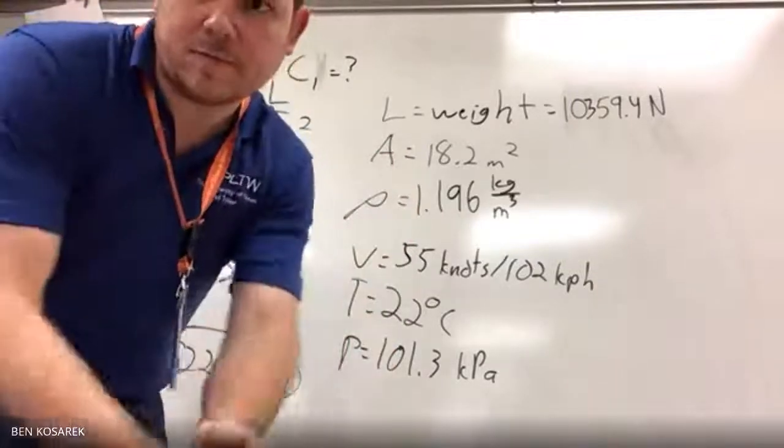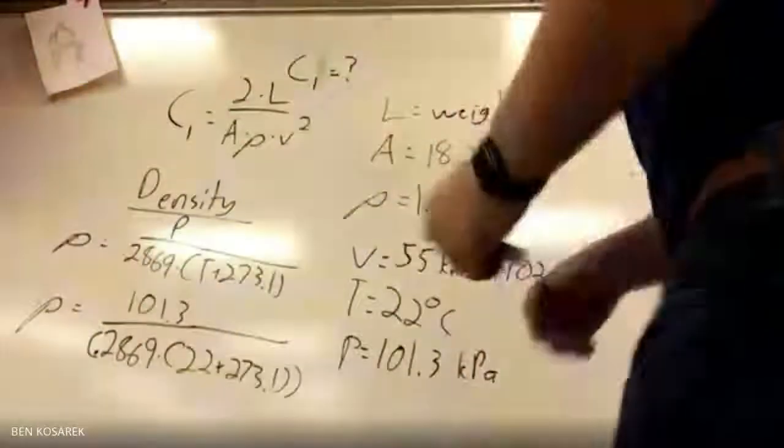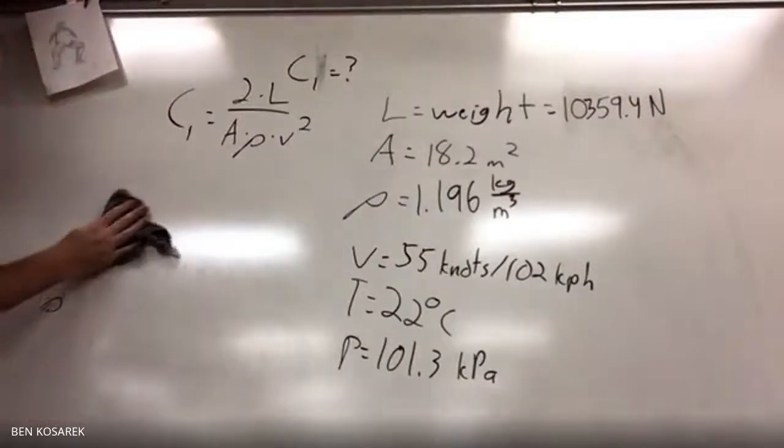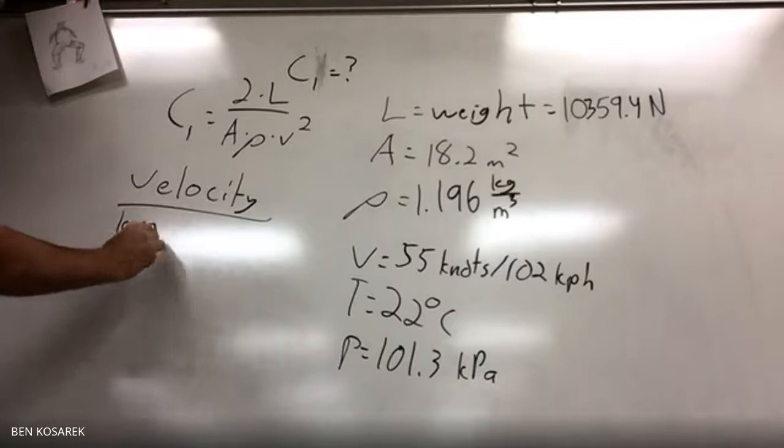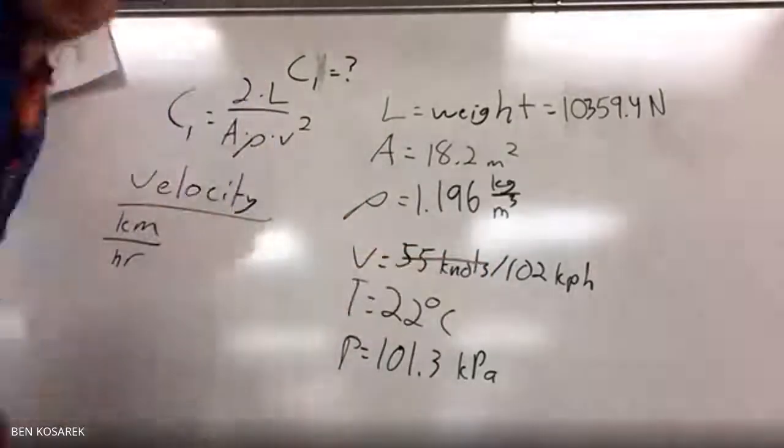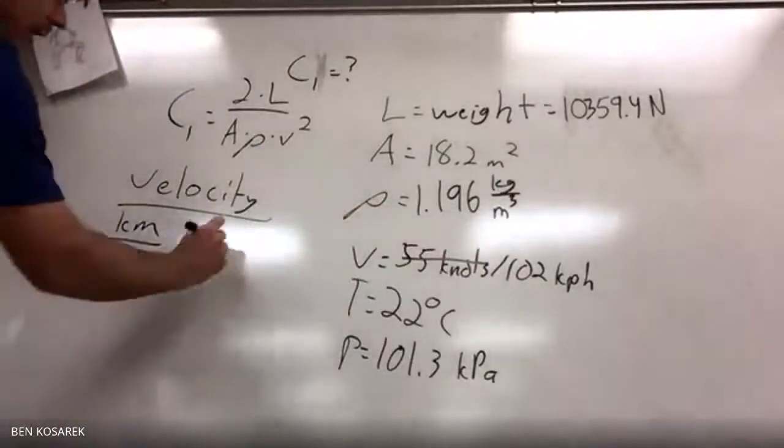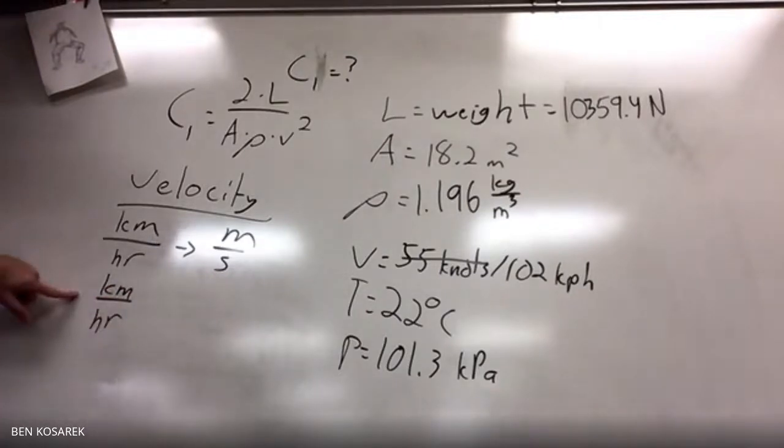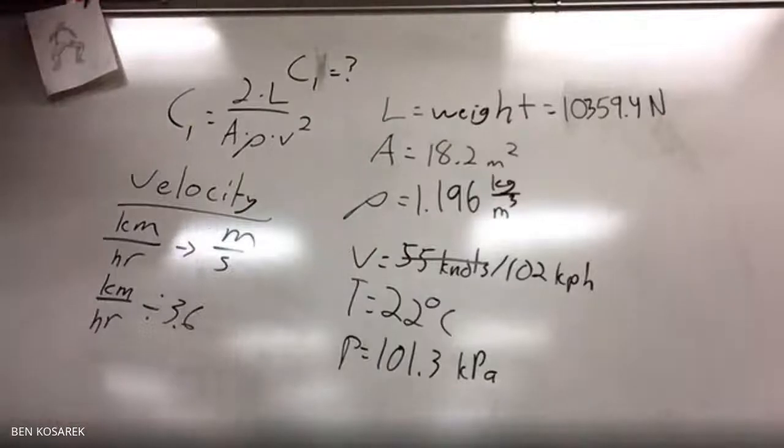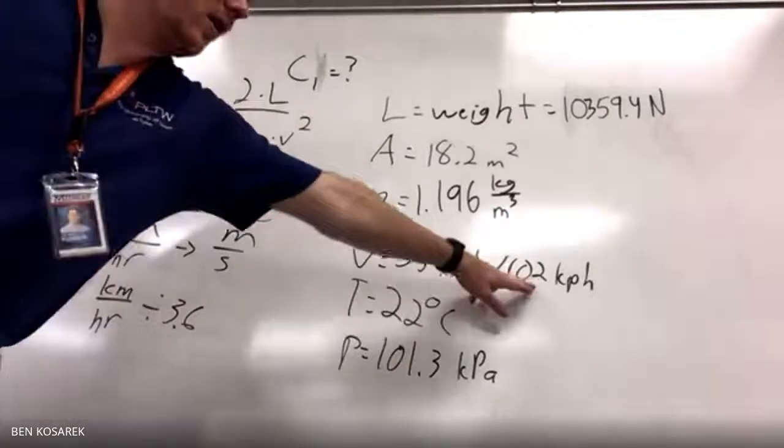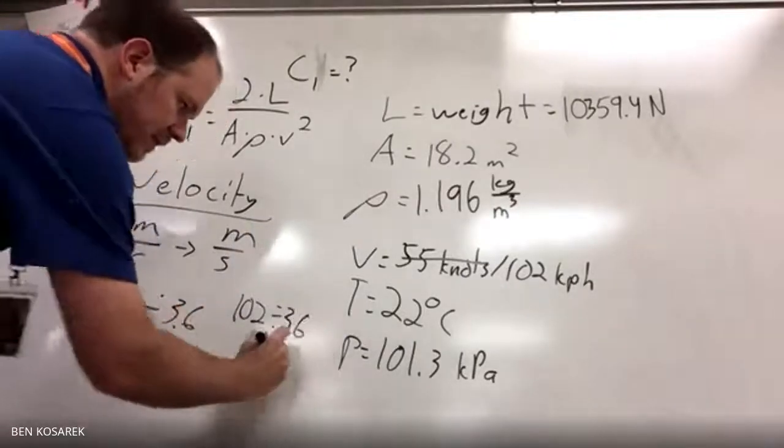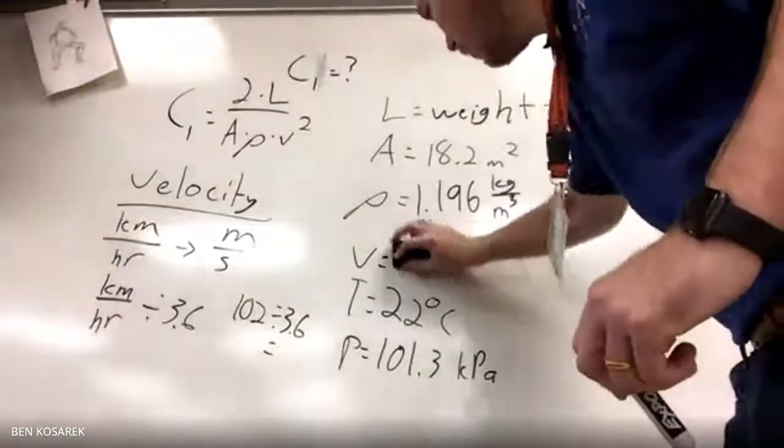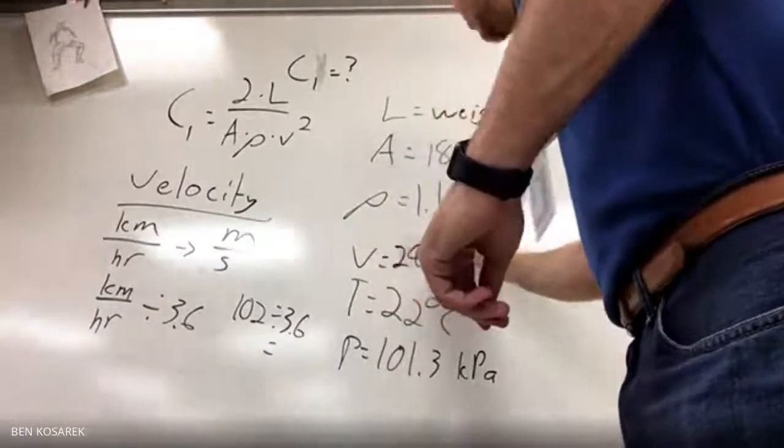To go from kilometers per hour to meters per second, take your kilometers per hour and divide by 3.6. In this case, 102 divided by 3.6 gives us a velocity of 28.3 meters per second. Now we have everything.